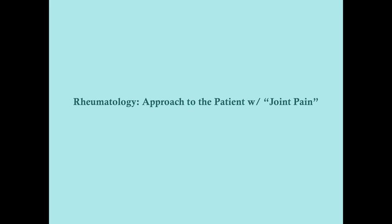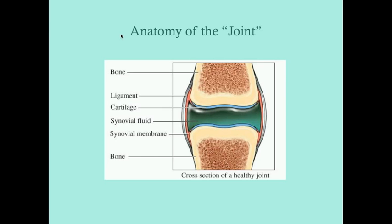Let's take a general approach to the patient with joint pain. Reviewing the anatomy: a joint is where two bones come together. You have bones on either side, cartilage at the end of each bone, and in between at the joint you have synovial fluid, which allows the joint to move in a fluid-like motion because it reduces friction between the bones.